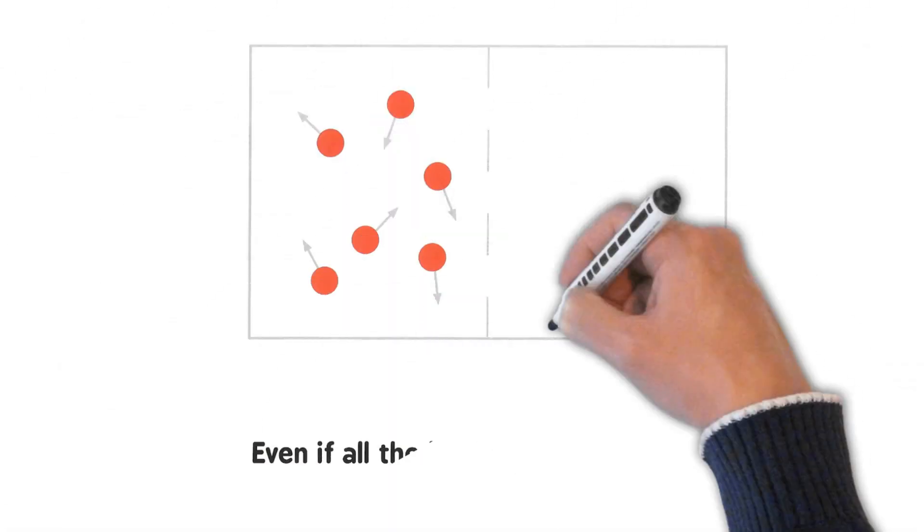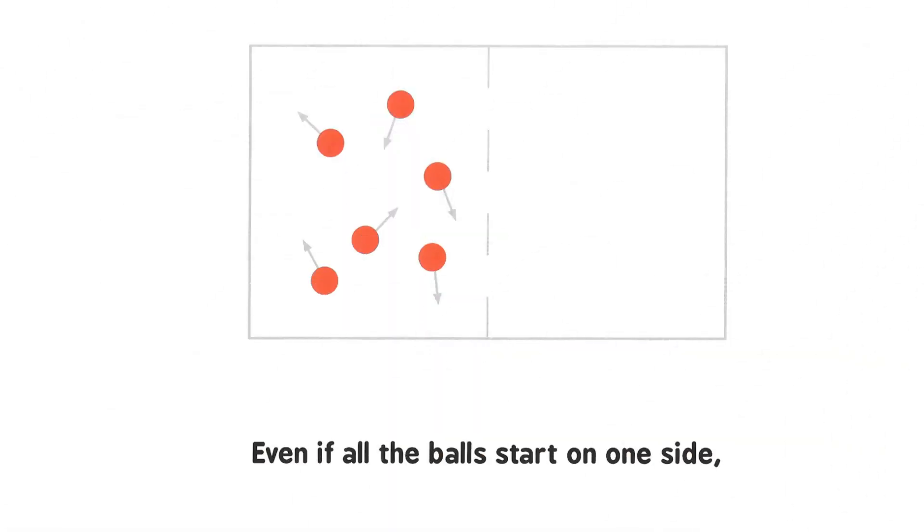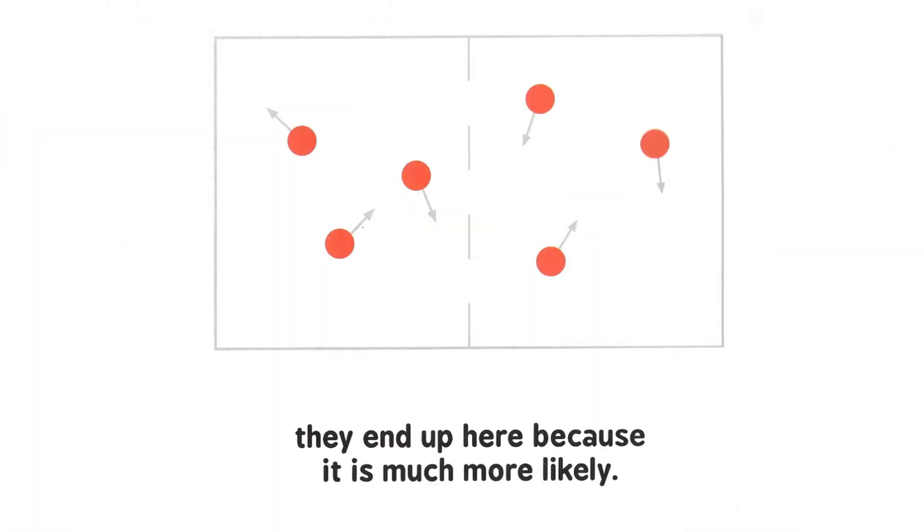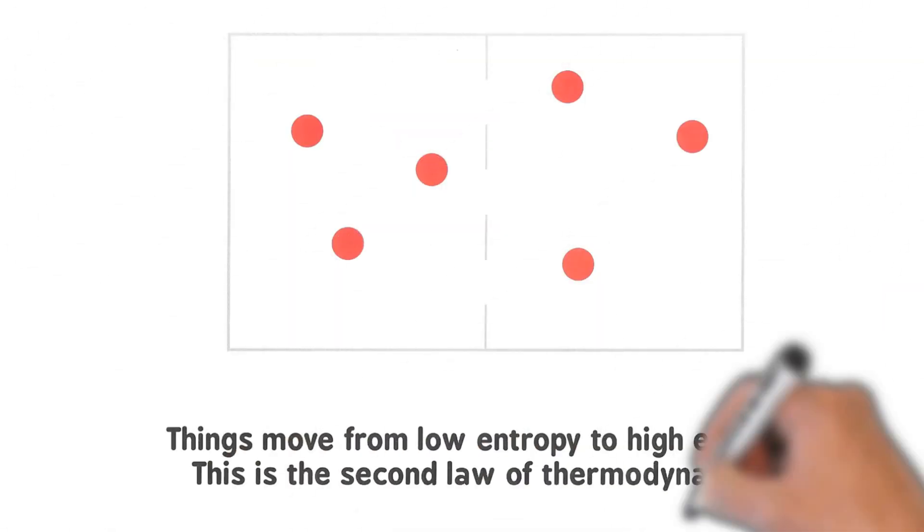Even if all the balls start on one side, they end up here because it is much more likely. Things move from low entropy to high entropy. This is the second law of thermodynamics.